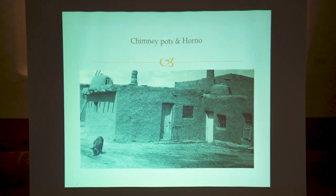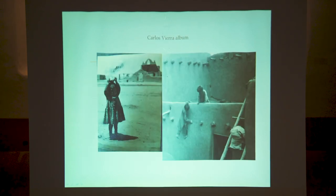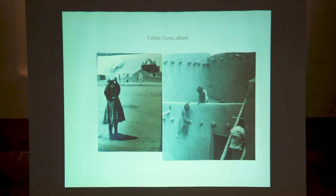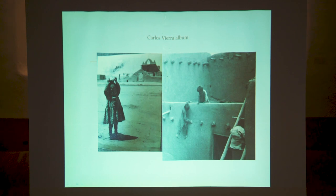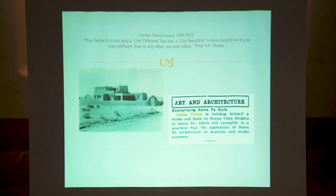Carlos Vieira was looking at a lot of different things like chimney pots and hornos on the roof. And Vieira was also instrumental in the creation of domestic architecture, making a modern Santa Fe style home. With Trent Thomas, who was an architect who worked with Rapp and Rapp, he worked in developing his home — the Carlos Vieira house on the old Pecos Trail — which gives you a sense of what the old Pecos Trail looked like in 1918. There was no vegetation out there to speak of.